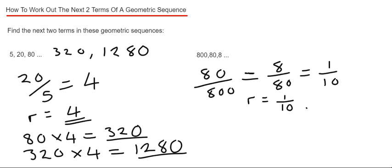So if we multiply 8 by 1 tenth, that will give us the next number in the sequence. So 8 times 1 tenth is 0.8, that's our next number.